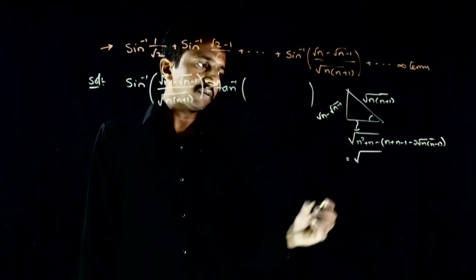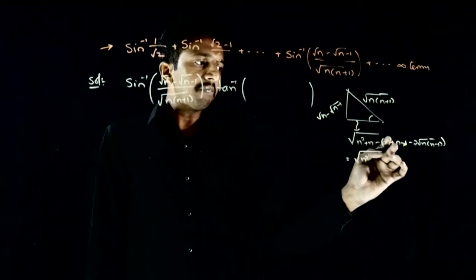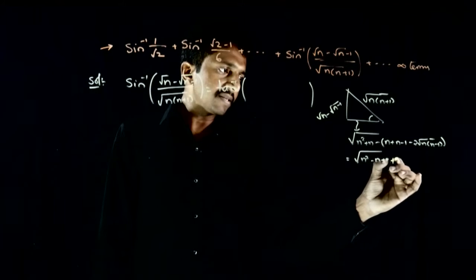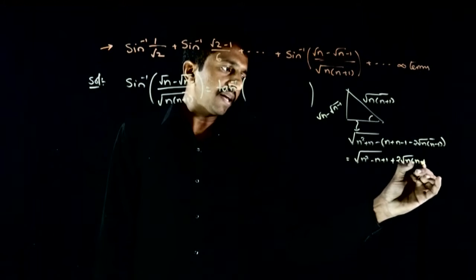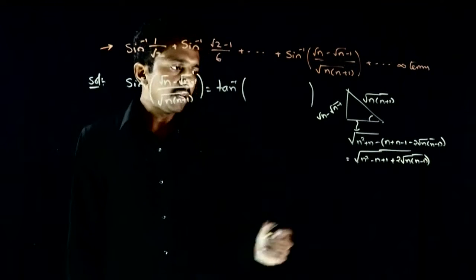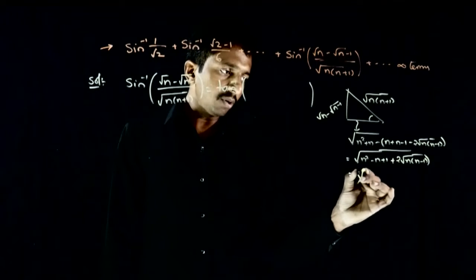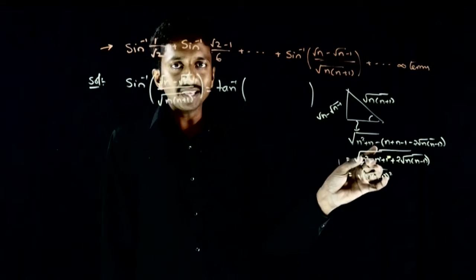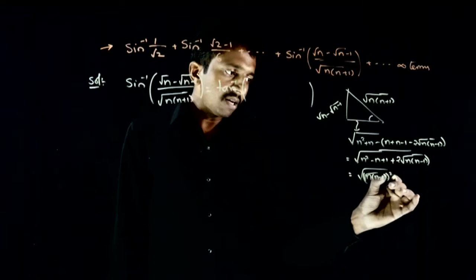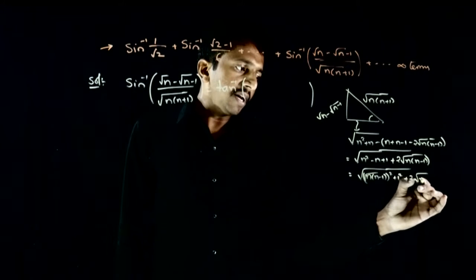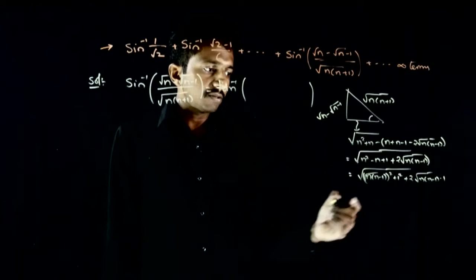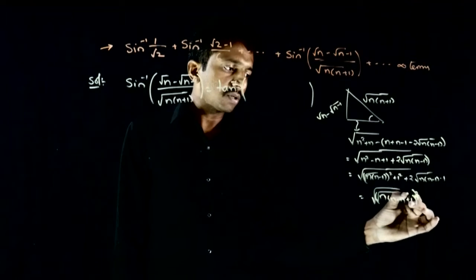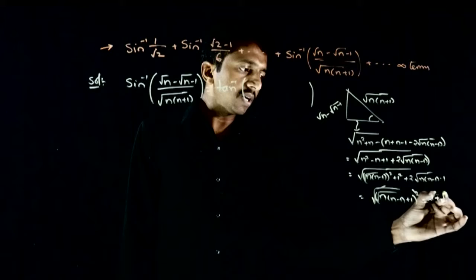Simplifying, that equals the square root of n² + n - n - 2n - n + 1 + 2·root(n(n-1)). This simplifies to square root of n(n-1) + 1, because n² - n = n(n-1), which can be written as square root of (root(n(n-1)) + 1)². The square and square root cancel, leaving the adjacent side equal to 1 + root(n(n-1)).